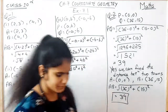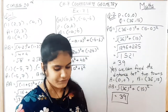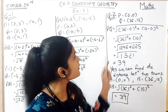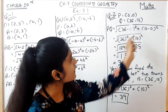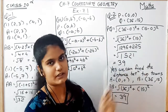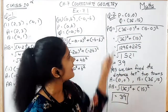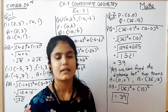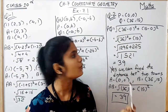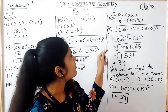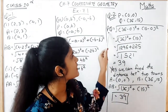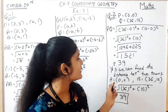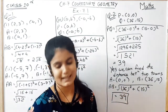In question number 2, we have to find the distance between the points (0, 0) and (36, 15). So we take P as O, i.e., (0, 0) and Q as (36, 15). Using the distance formula, we get the answer 39.